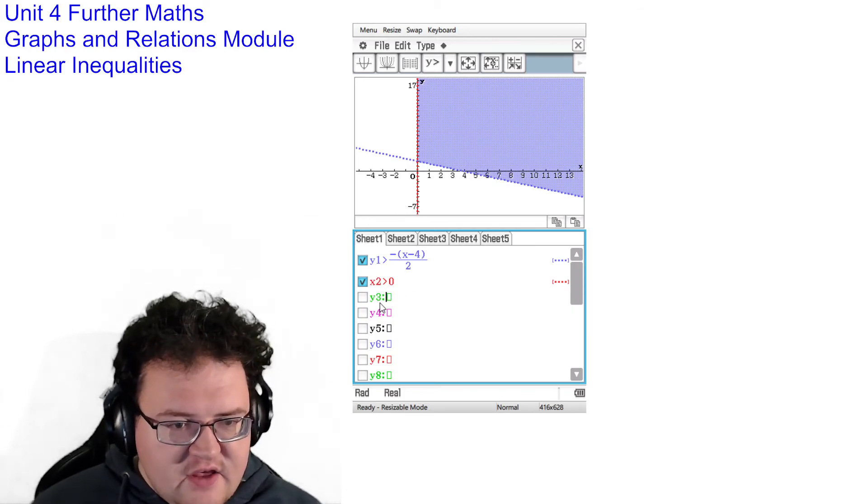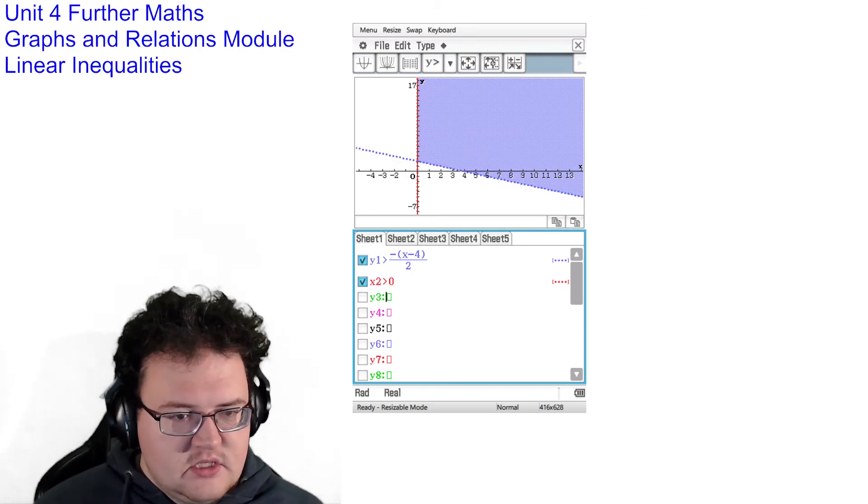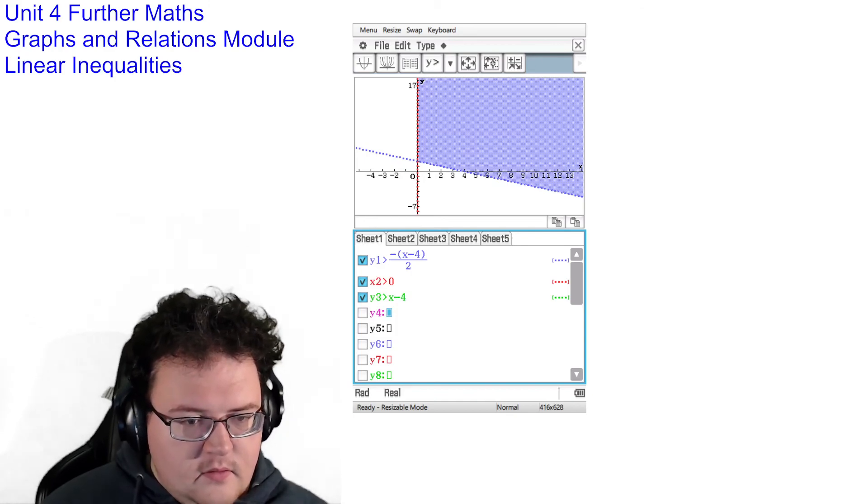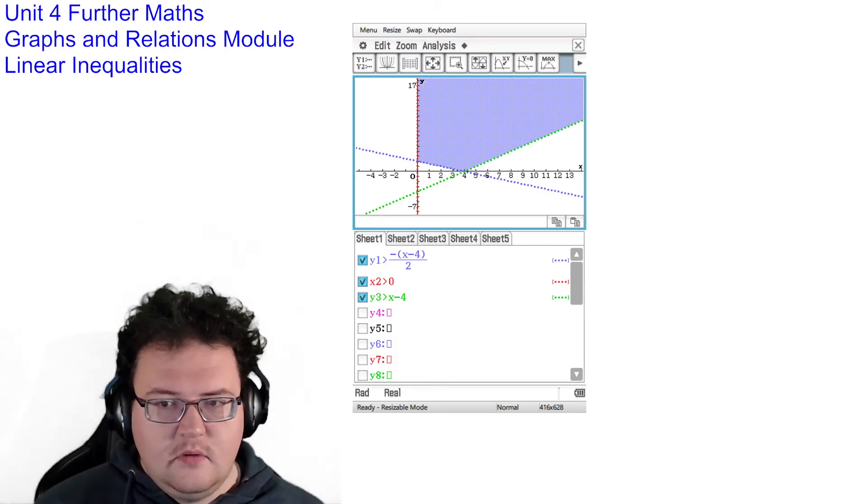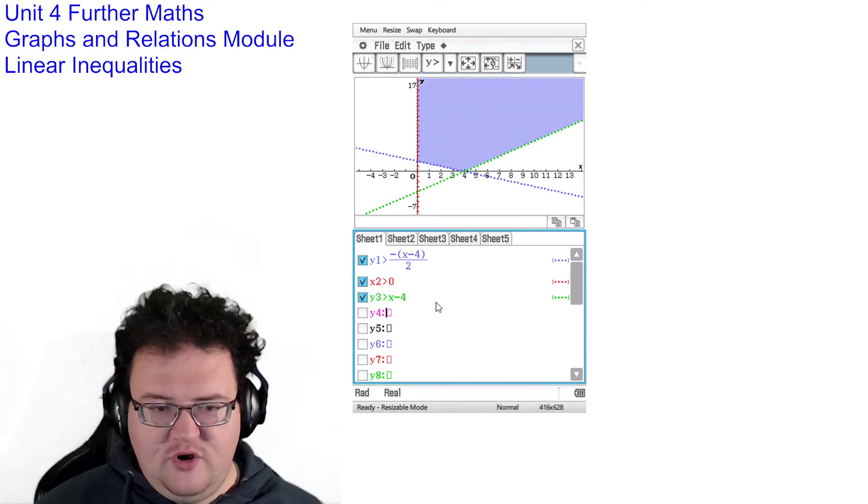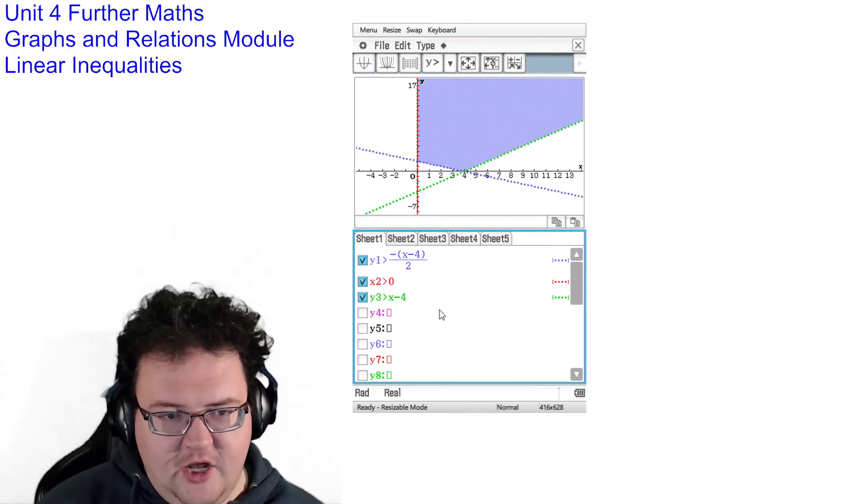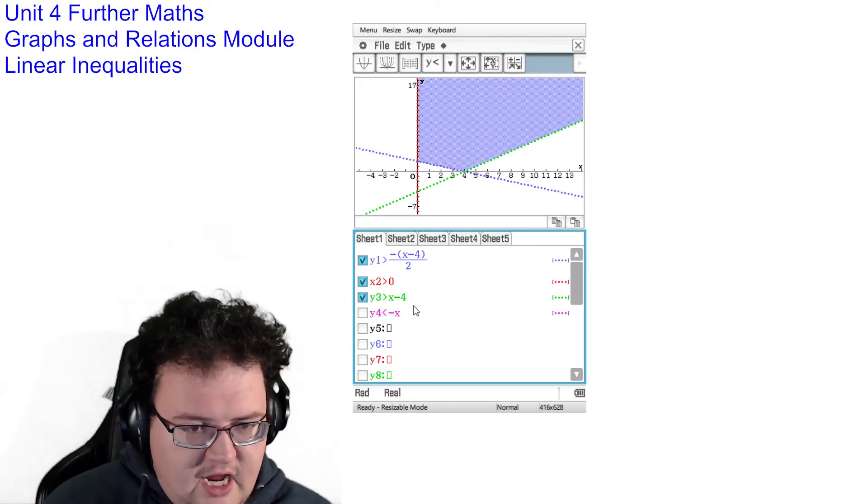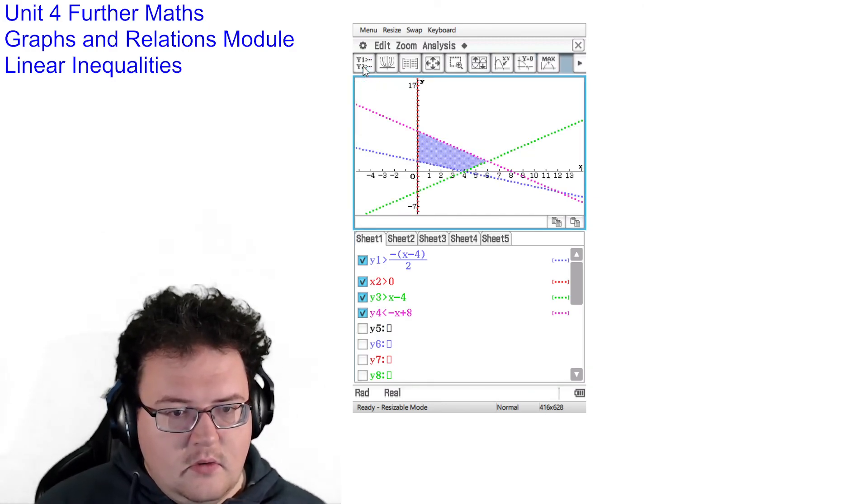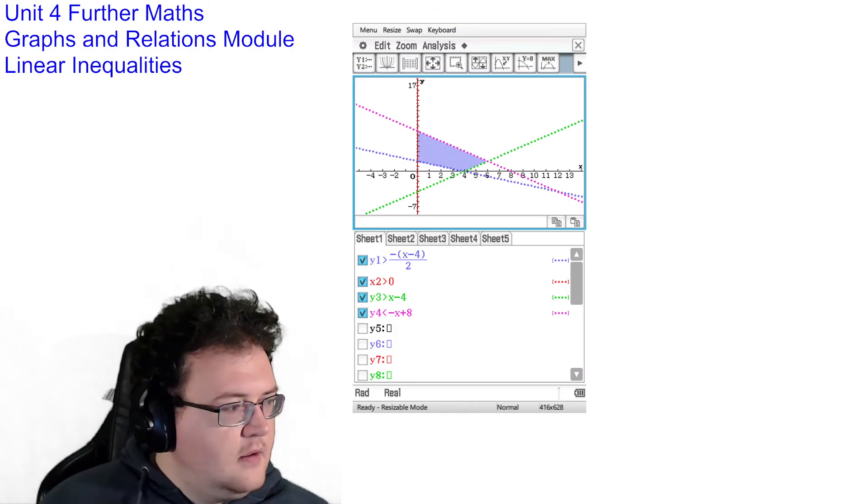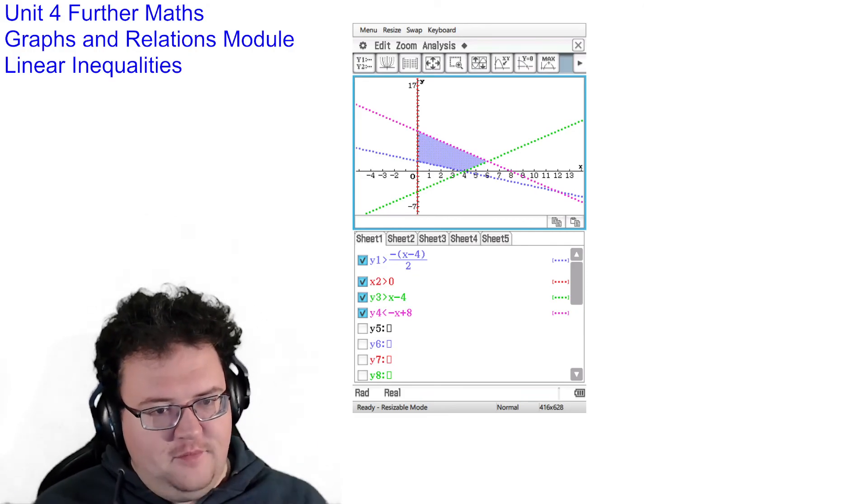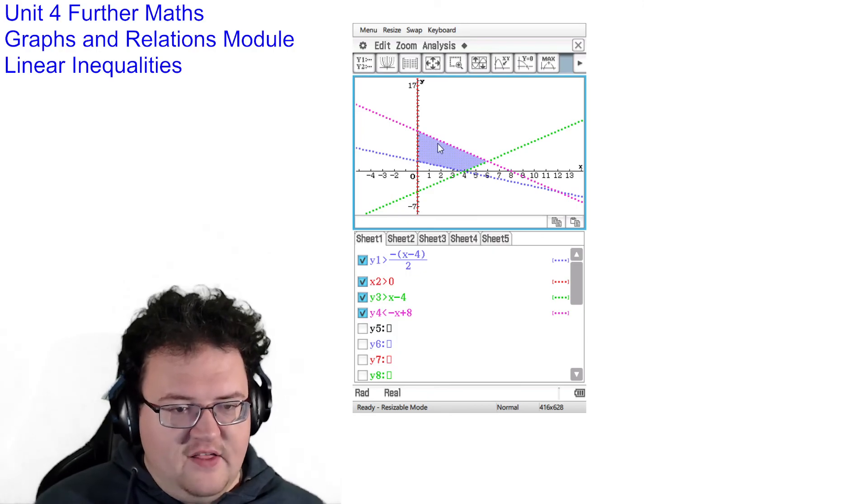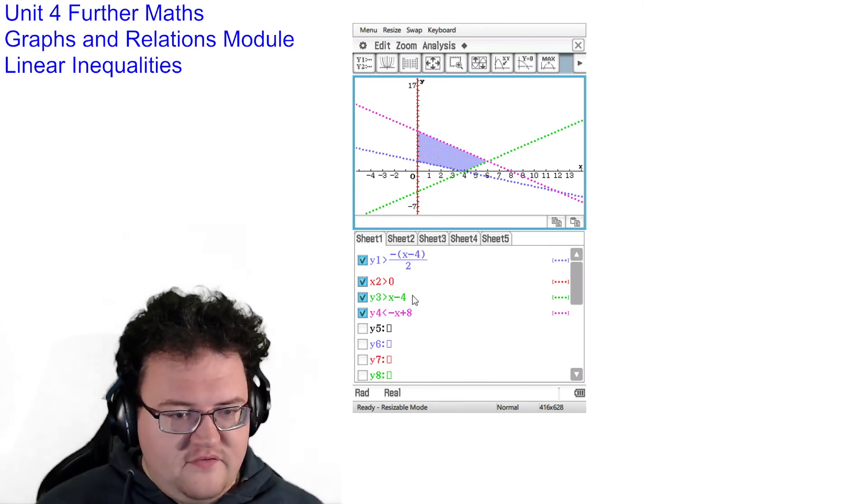So I could go in and I could add even more inequalities just for this, just for a laugh. So I could go in and go, well okay, what about if I had this green one in? What about if I put another one in there? y is less than negative x plus 8. And what it does is it keeps narrowing down the shaded area for me. And the shaded area are the only values where any answer in here actually is approved by all of these different graphs.